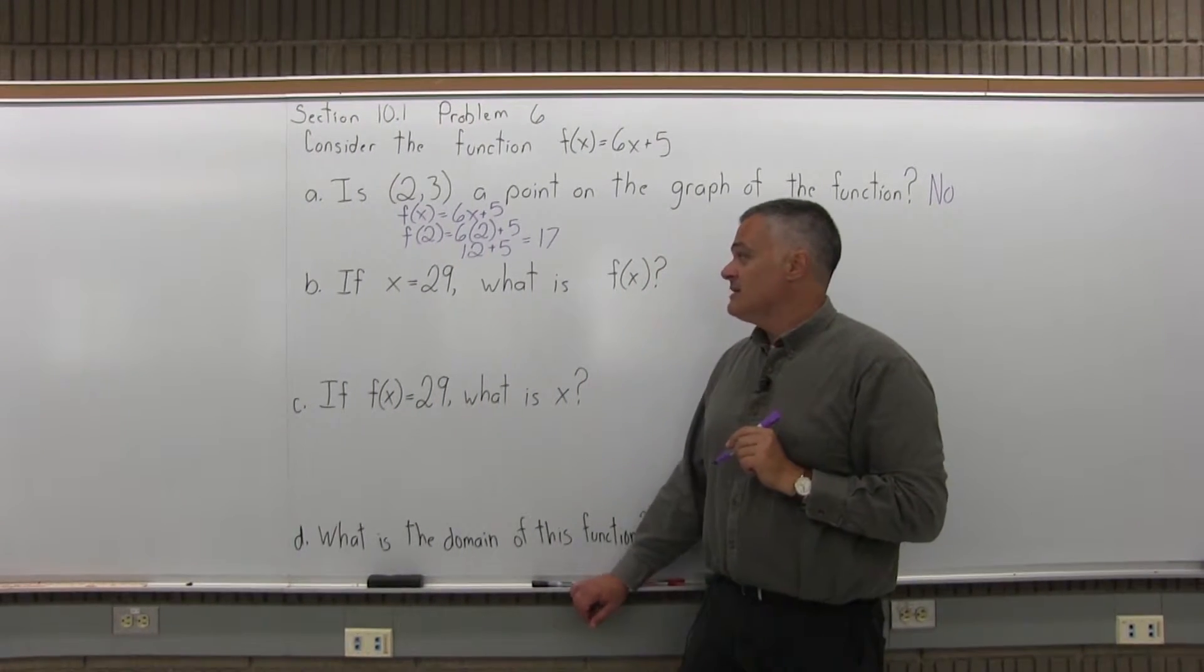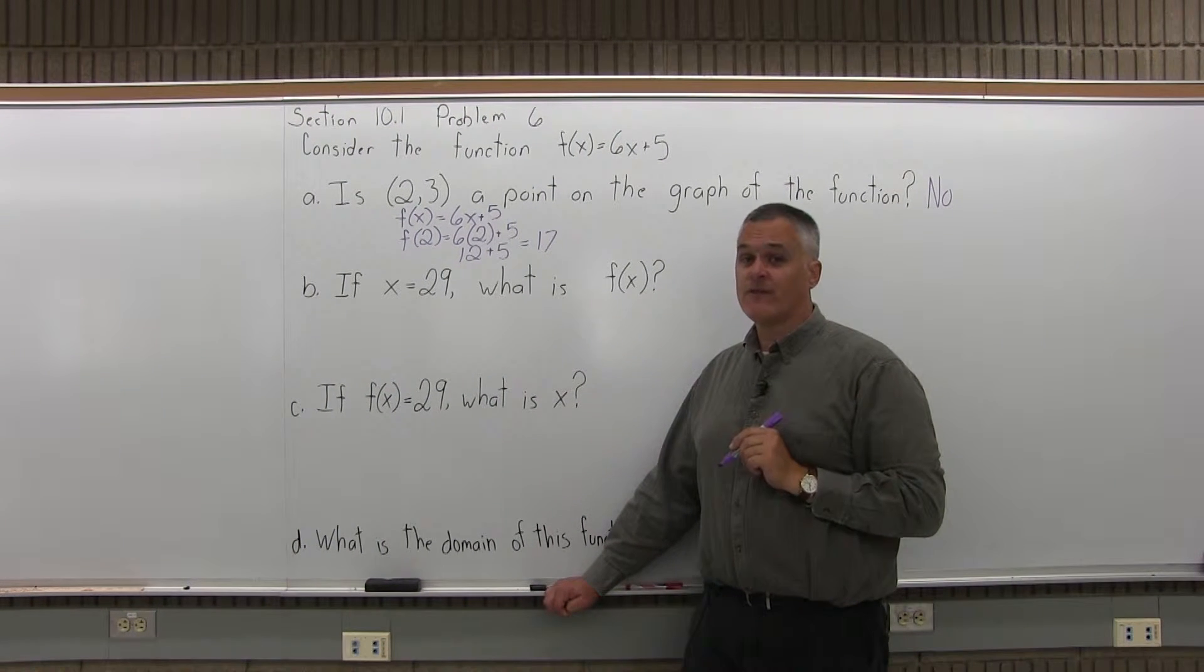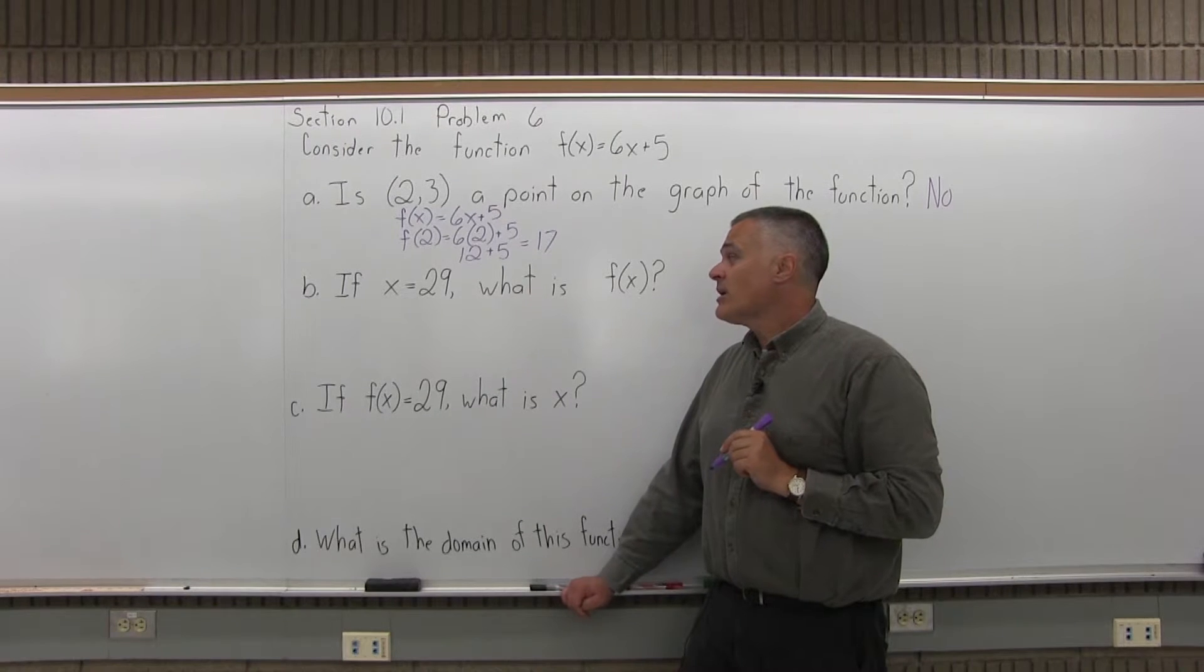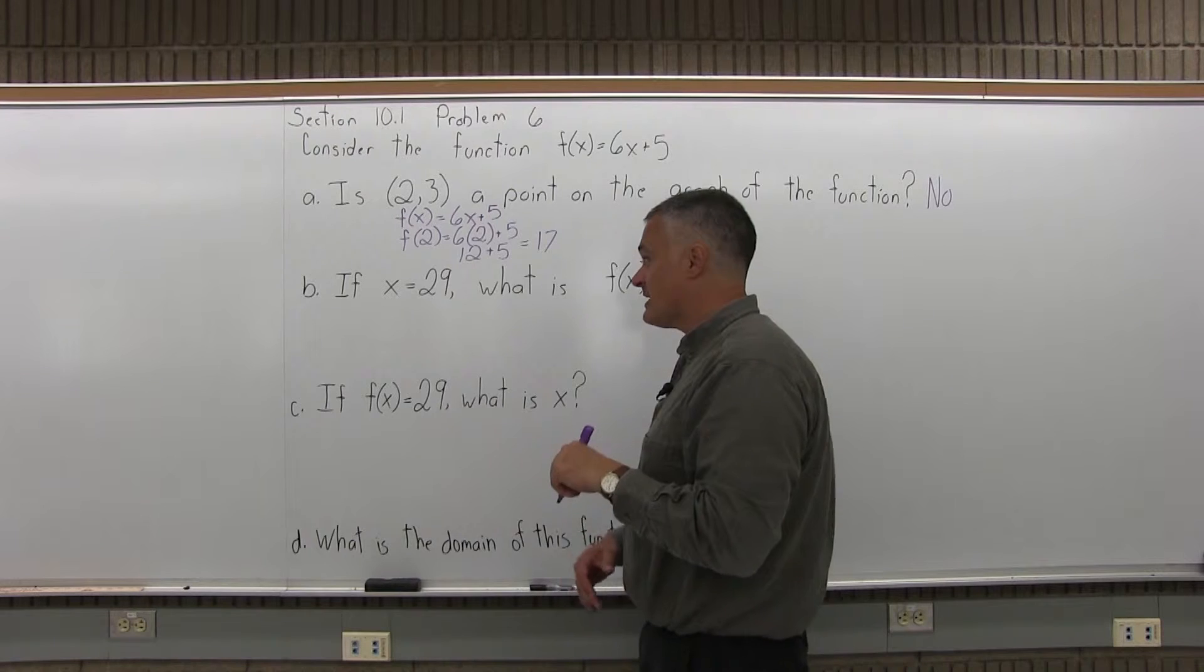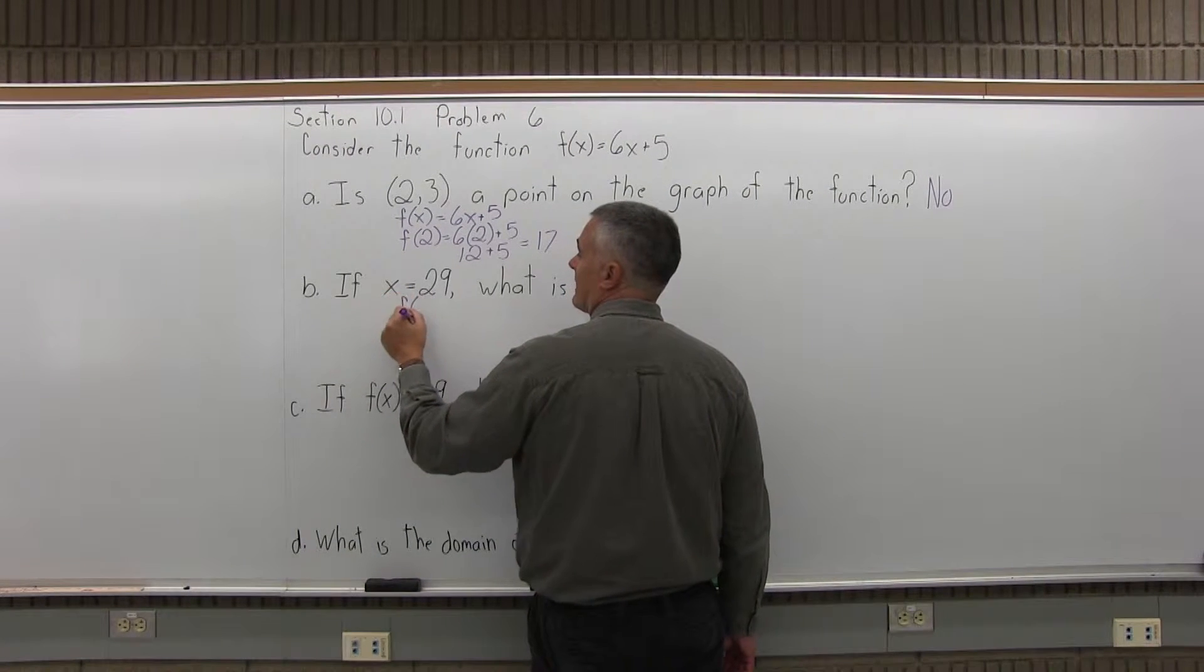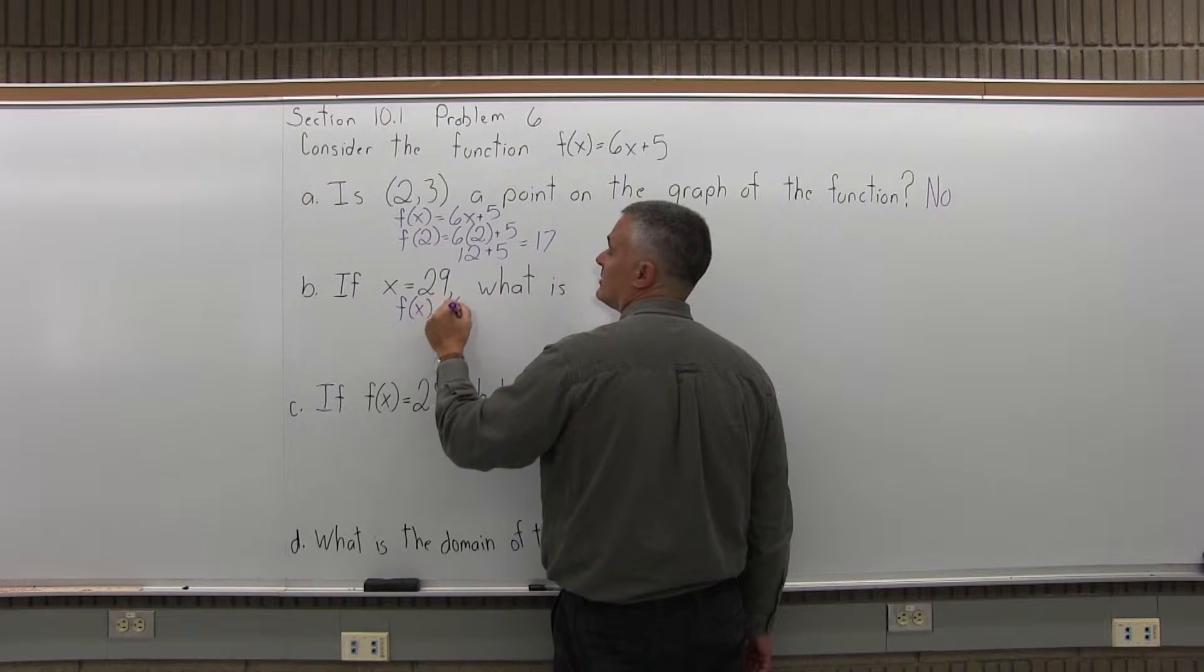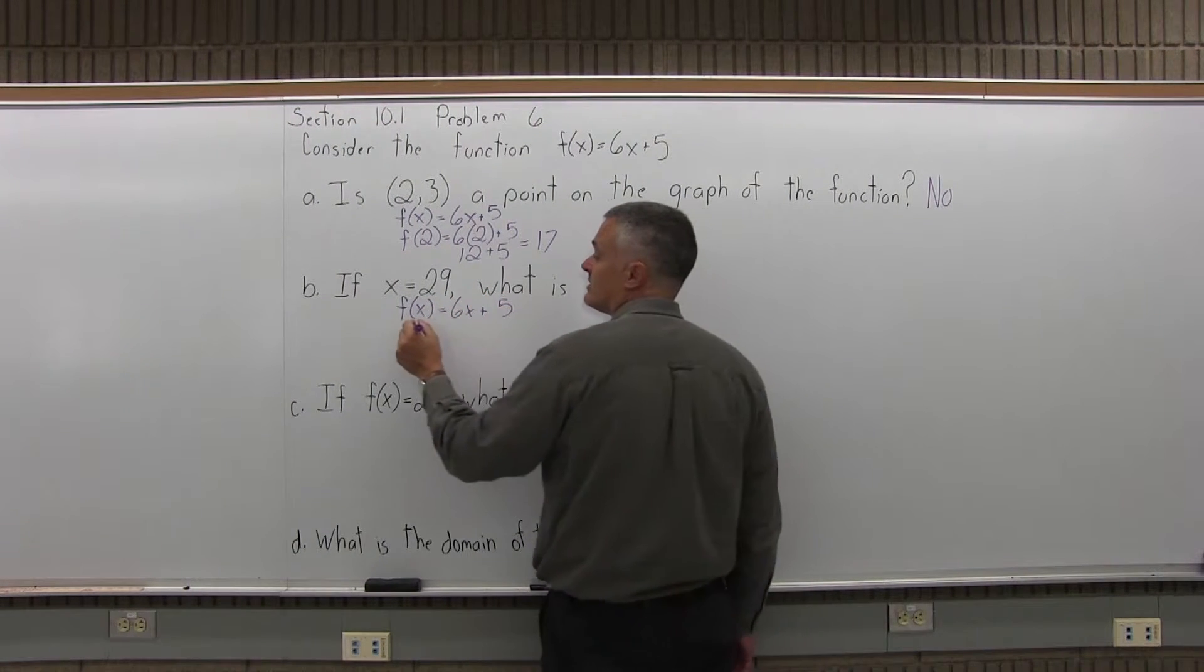Part B says, if x equals 29, what is f of x? So essentially part B is asking you, if you put in a 29, what do you get as an output? If you use 29 as an input, what do you get as an output? So take the function that's given, which is f of x equals 6x plus 5, and put in a 29 for x and see what you get.